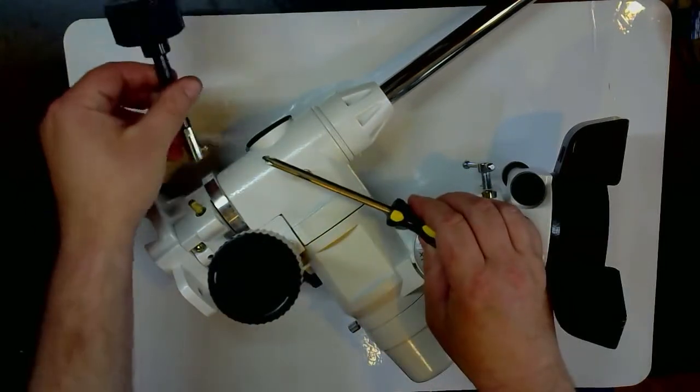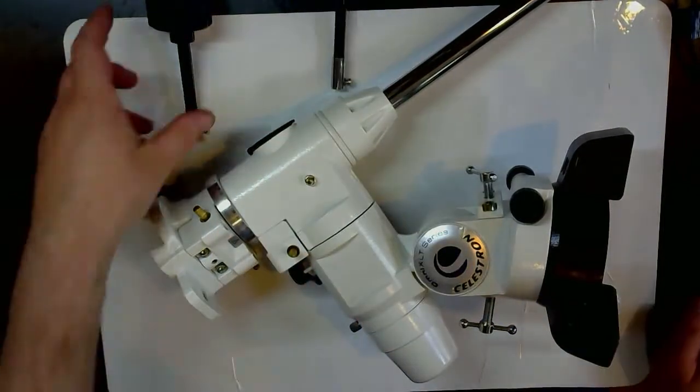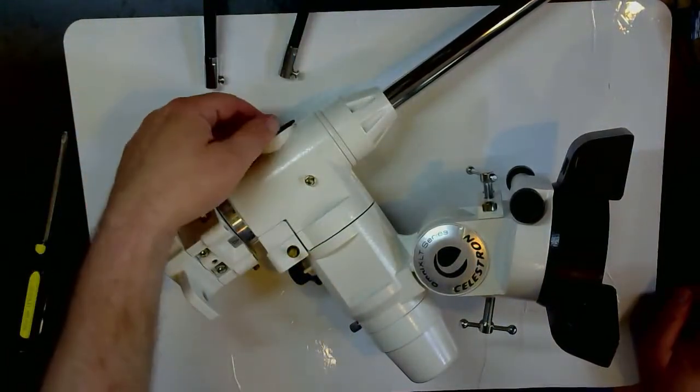These knobs will just come right off, one and two. Take them and put them off to the side.